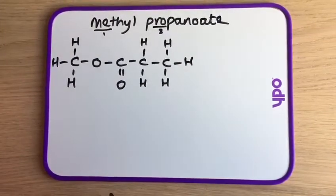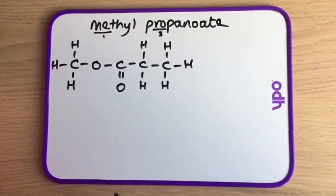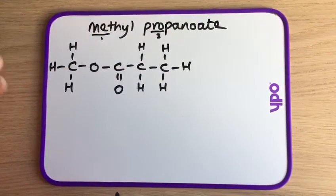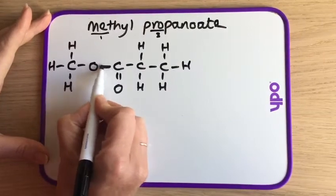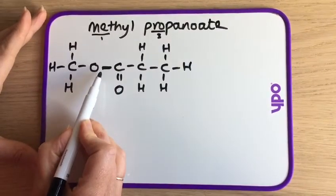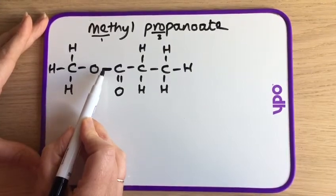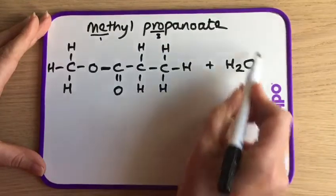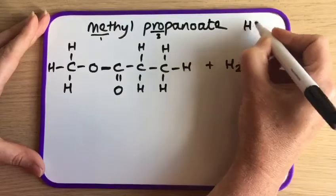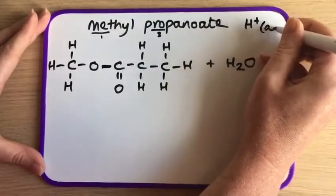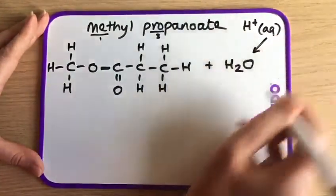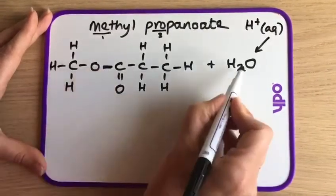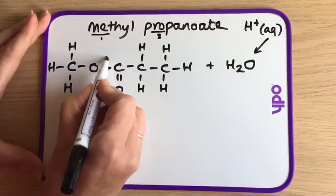There's our ester. Hydrolysis is the breaking of a bond due to the action of water or the hydroxide ion, and the bond we're going to break is this one here — it's the same bond that was made during esterification, the ester bond. We're going to add the water now. If we're doing acid catalysis, it's important that you put the AQ symbol because that provides the water. So we're going to break that bond due to the action of the water.